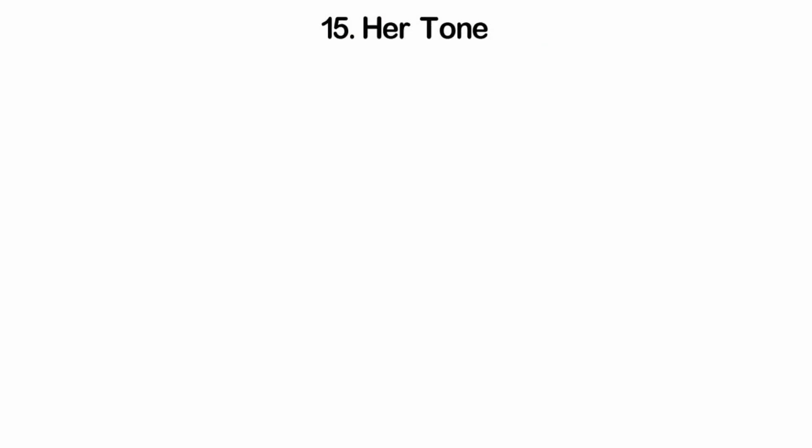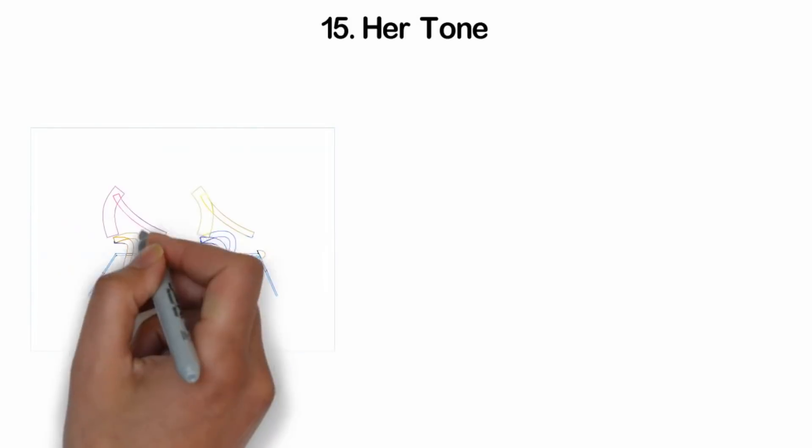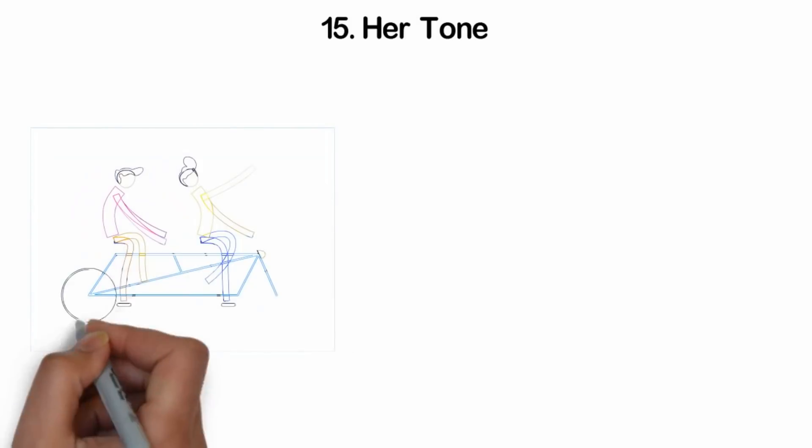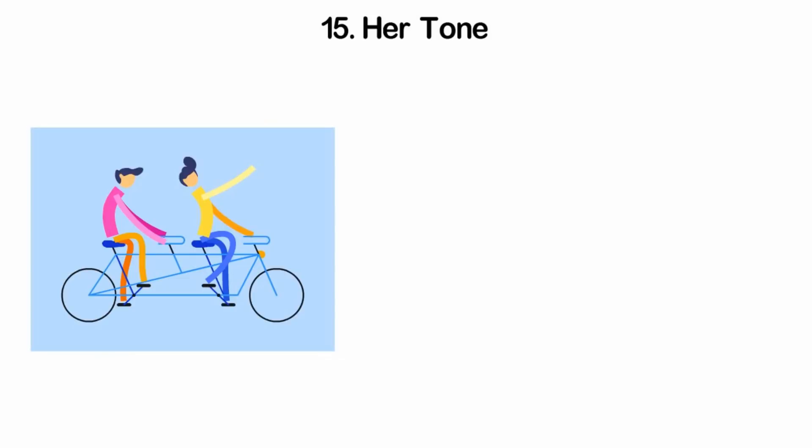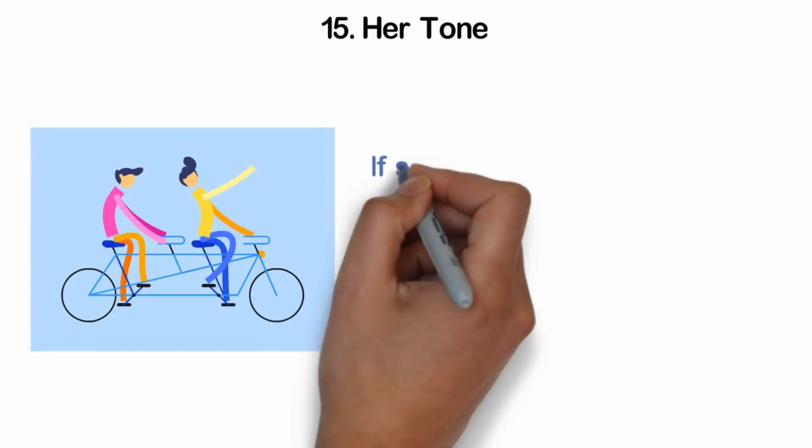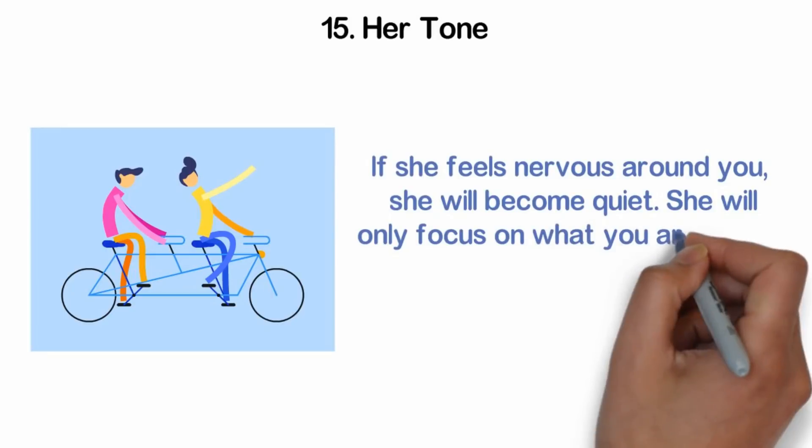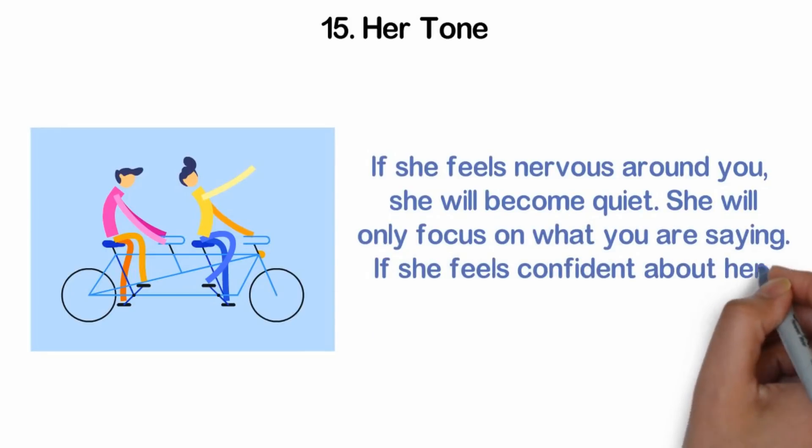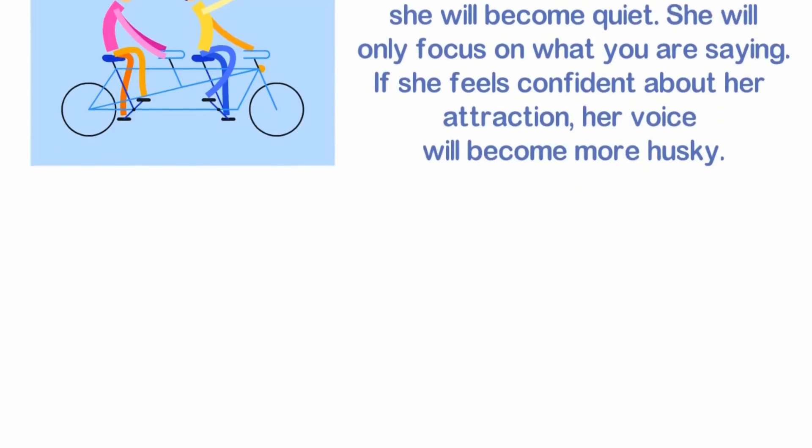15. Her tone. Whenever you two are alone, you notice a difference in the way she talks to you. Maybe her voice takes on a more sensual tone. Or maybe she gets this timidity in the way she speaks. Either it is deliberate, or she has no control over her tone around you. If she feels nervous around you, she will become quiet. She will only focus on what you are saying. If she feels confident about her attraction, her voice will become more husky.